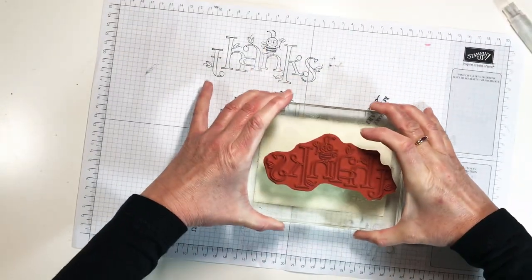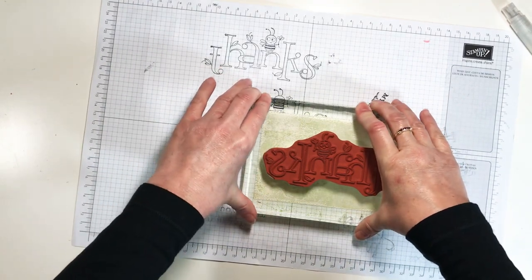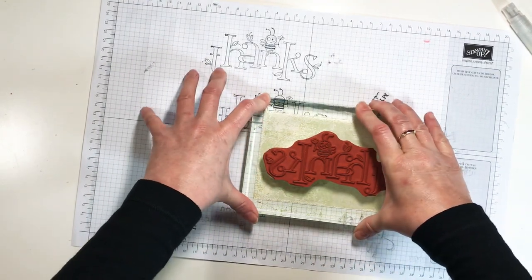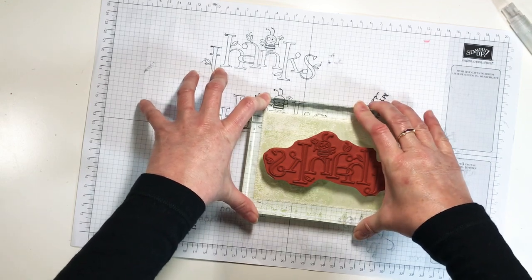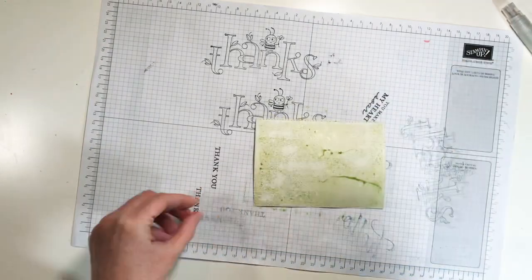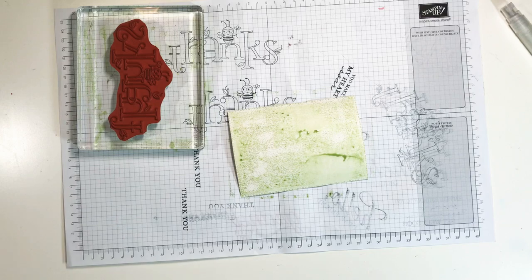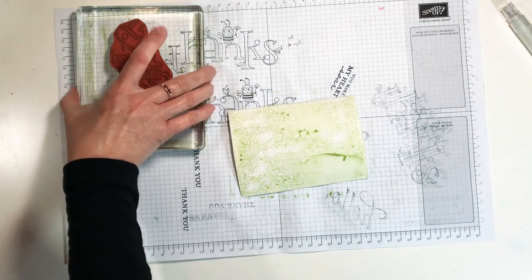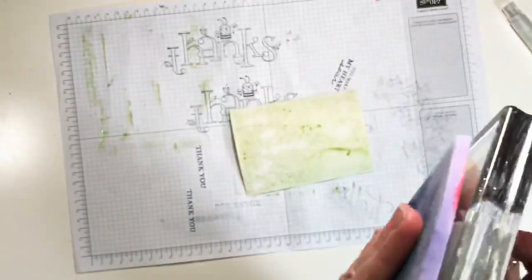That way the ink has somewhere to go and I'm just going to hold it here for a few minutes for that paper to absorb the ink and then I'm going to lift it off and that gives me a really nice almost watercolor effect and I'm just going to take my chamois and clean that off.